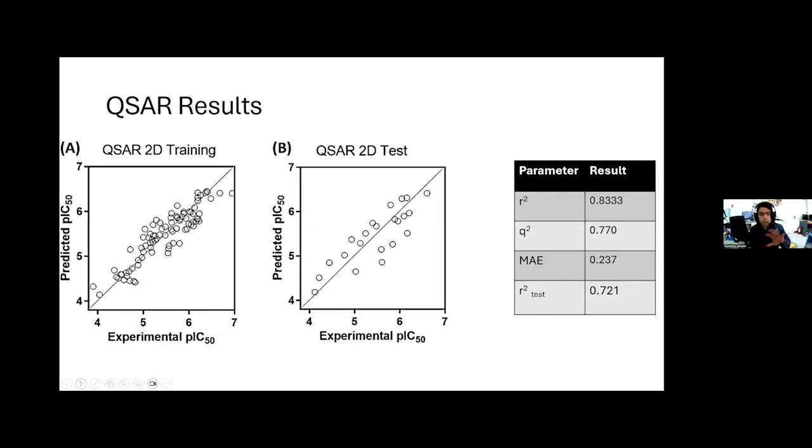Our QSAR results are, in summary, shown in this slide. As you can see, we have high predictivity in the training set and test sets, and the statistical parameters show proper statistical validation. Therefore, our equation can be validated.